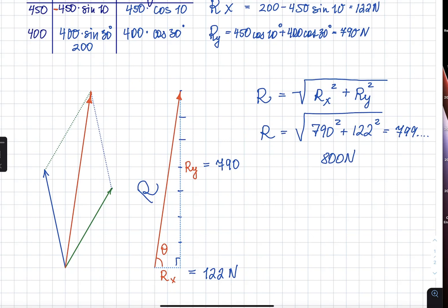Then, we also need to figure out the direction. Direction comes from an angle, so I have it marked as theta. Angle theta to the horizontal. You will do tangent inverse or arctangent of 790 over 122. That is 81 degrees.